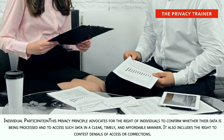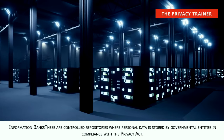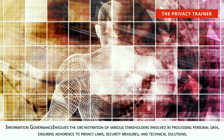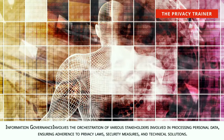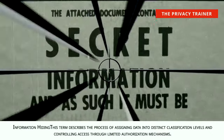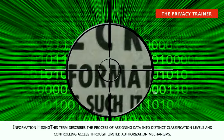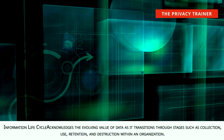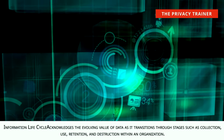Individual participation. This privacy principle advocates for the right of individuals to confirm whether their data is being processed and to access such data in a clear, timely, and affordable manner. It also includes the right to contest denials of access or corrections. Information banks. Controlled repositories where personal data is stored by governmental entities in compliance with the Privacy Act. Information governance. Involves the orchestration of various stakeholders involved in processing personal data, ensuring adherence to privacy laws, security measures, and technical solutions. Information lifecycle. Acknowledges the evolving value of data as it transitions through stages such as collection, use, retention, and destruction within an organization.